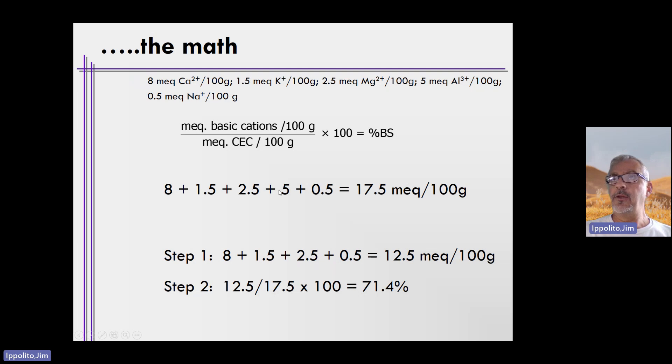How do you determine base saturation? The first step is to add up all of the basic cations only. Calcium, this is potassium, this is magnesium, and this is sodium, in terms of milliequivalents per 100 grams, from the very top of the slide. That equals 12.5.